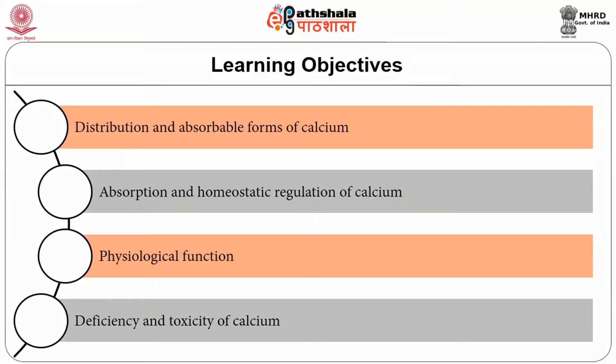Within this, we have the role of osteoporosis and osteomalacia, which are also manifestations of the instability of calcium absorption in the system. At the end of this session you would be able to understand about the distribution and absorbable forms of calcium, absorption and homeostatic regulation of calcium, physiological functions of calcium, and deficiency and toxicity of calcium.